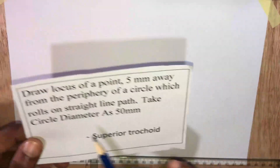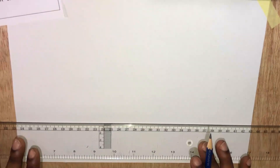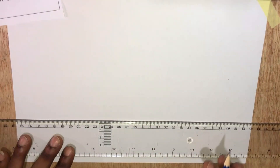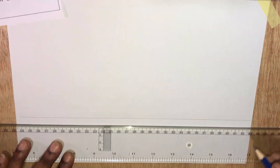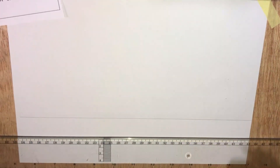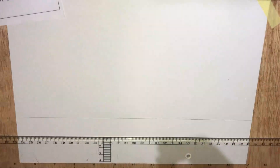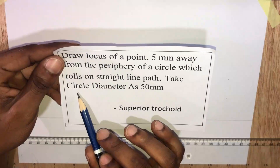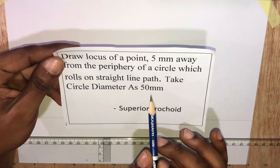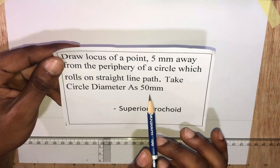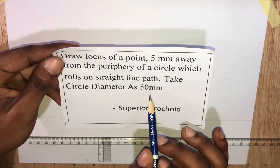Now let's draw a straight line path. The rolling circle has a diameter of 50mm, hence a radius of 25mm.